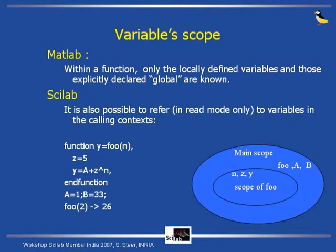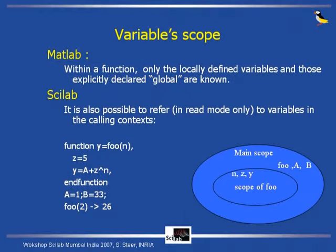In Scilab, it is also possible to refer to variables which are in the calling scope. For example, I create this small function 'foo', which computes Y given N. Inside 'foo', I define Z equal 5 and Y equal A plus Z to the power N. A is not defined in this function. But if I define A and B here and call 'foo', when 'foo' is executed, the value of A is taken from the main scope. So you have the scope of 'foo' containing N, Z, and Y, while the main scope contains the function itself, the variable A, and the variable B.